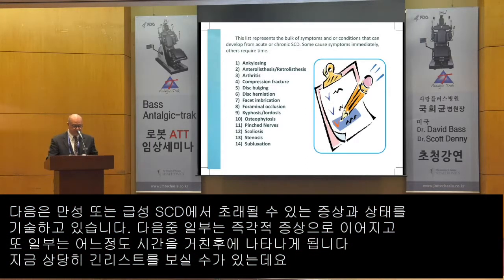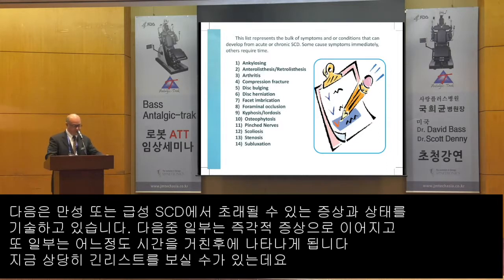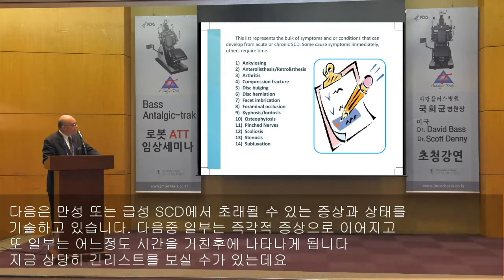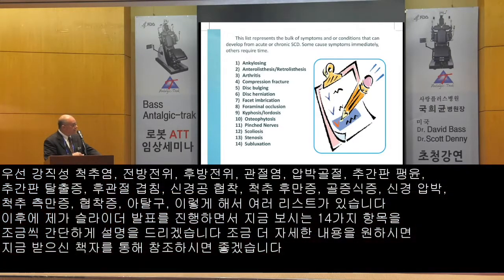This list represents the bulk of symptoms and conditions that can develop from acute or chronic spinal compression disorder. Some cause symptoms immediately, others require time. This is an extensive list, starting with ankylosing, anterolisthesis, retrolisthesis, arthritis, compression fracture, disc bulging, herniation, facet imbrication, foraminal occlusion, kyphosis, lordosis, osteophytosis, pinched nerves, scoliosis, stenosis, and subluxation.